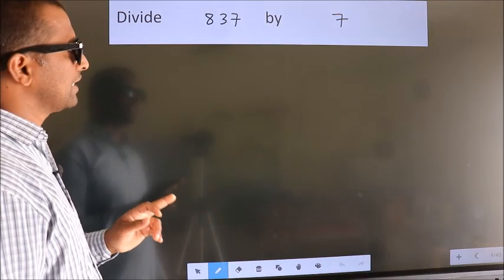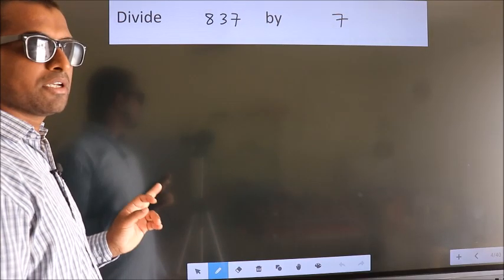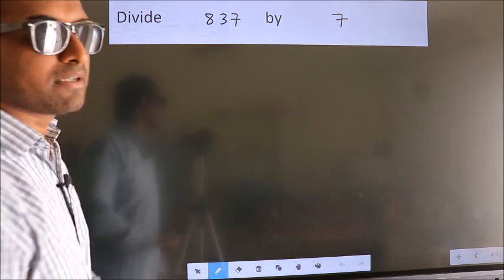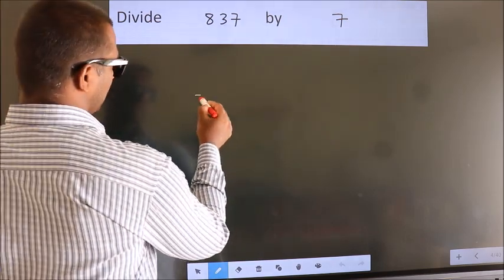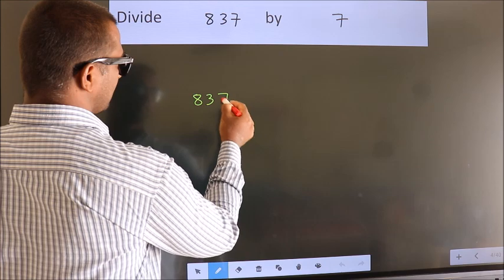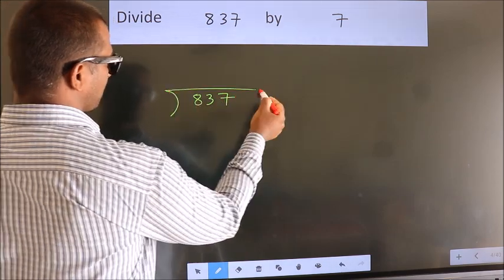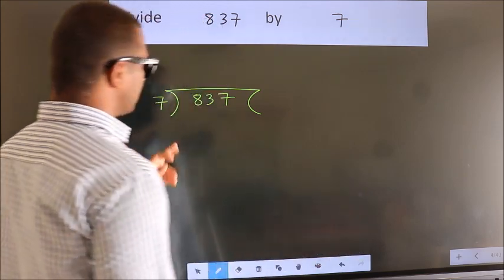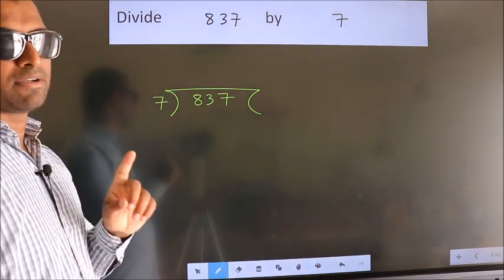Divide 837 by 7. To do this division, we should frame it in this way. 837 here, 7 here. This is your step 1.